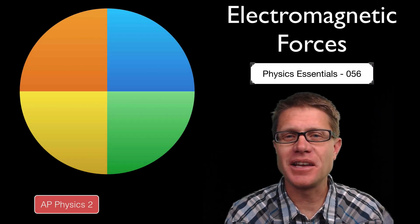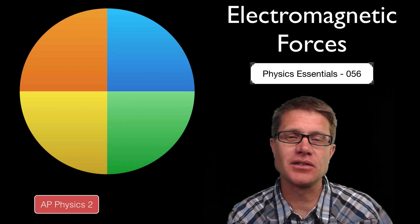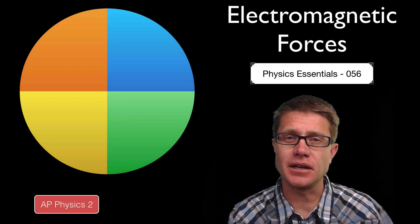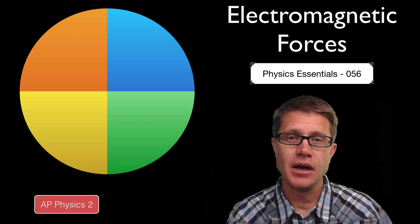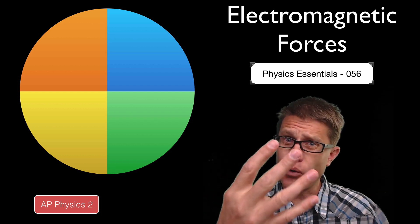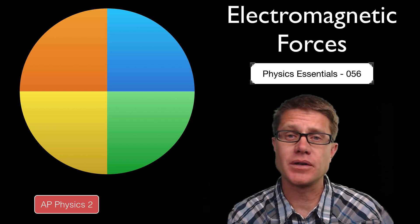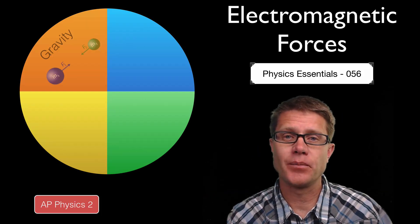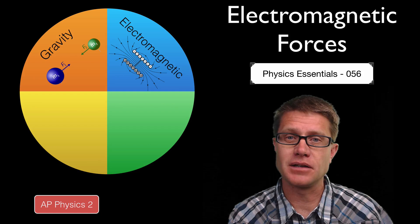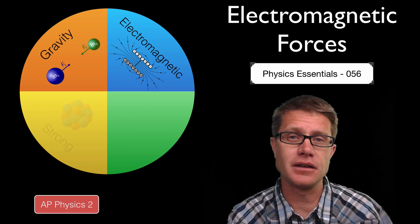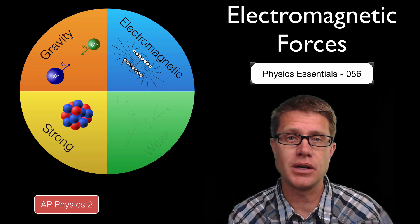Hi, it is Mr. Andersen and this is AP Physics Essentials video 56. It is on the electromagnetic force. Remember there are four fundamental forces in the universe: gravity, electromagnetism, and then finally the strong and the weak nuclear force.